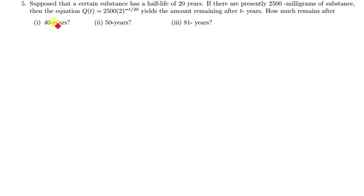Here we'll just be replacing what is t. We put 40, so we're going to have Q(40). In this equation, where t is, we put 40, so we'll have 2500 times 2 raised to power negative 40 over 20.